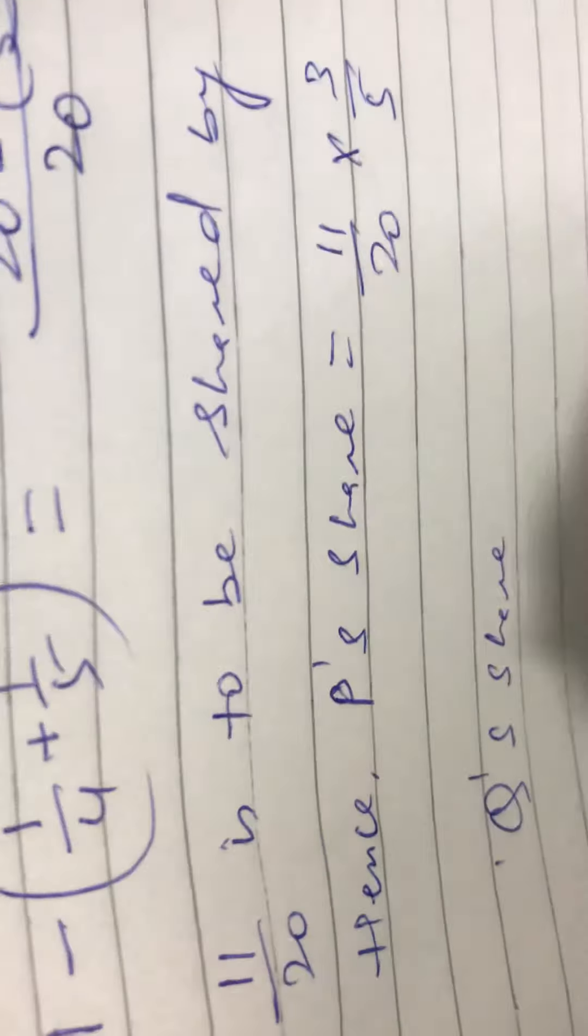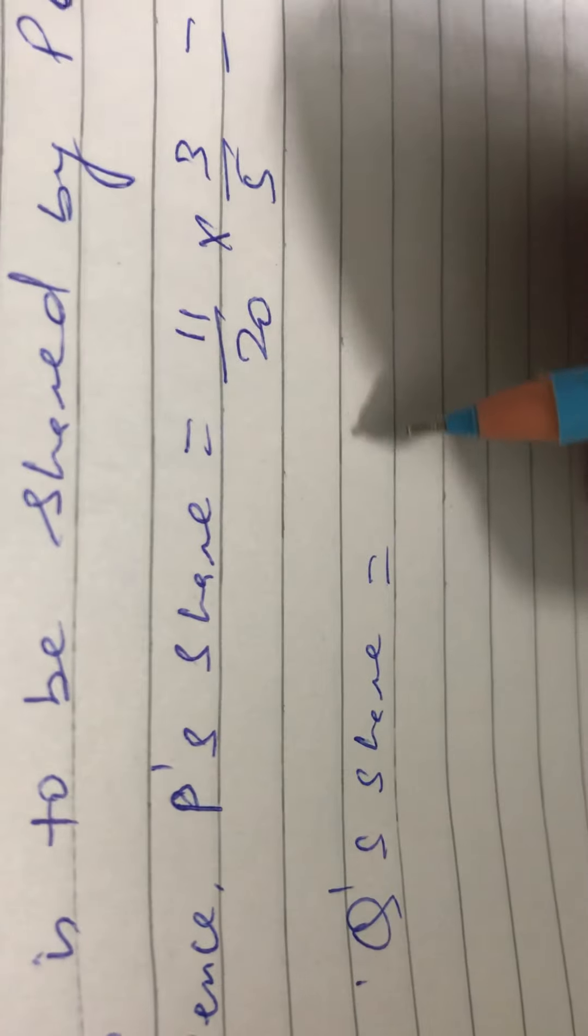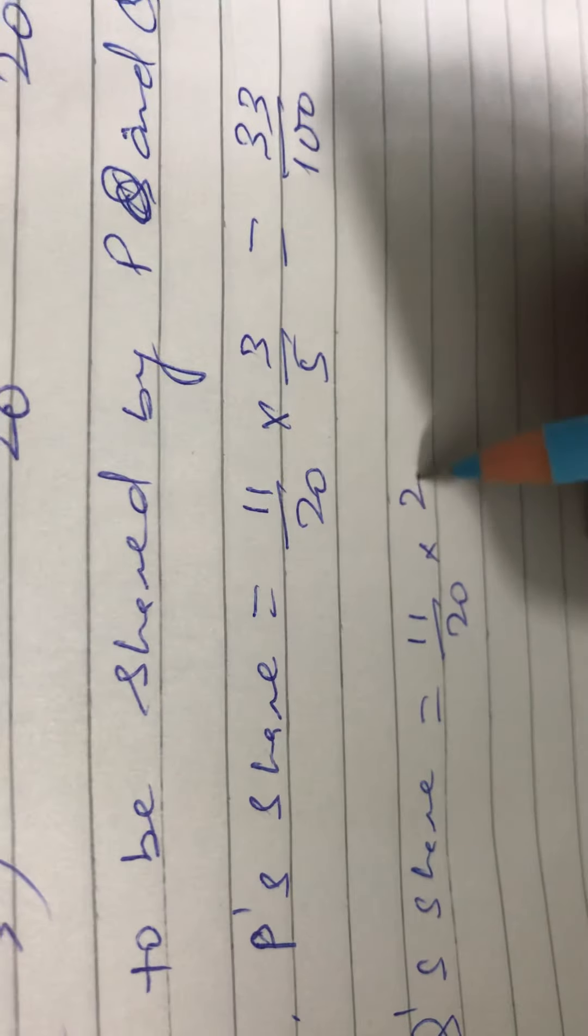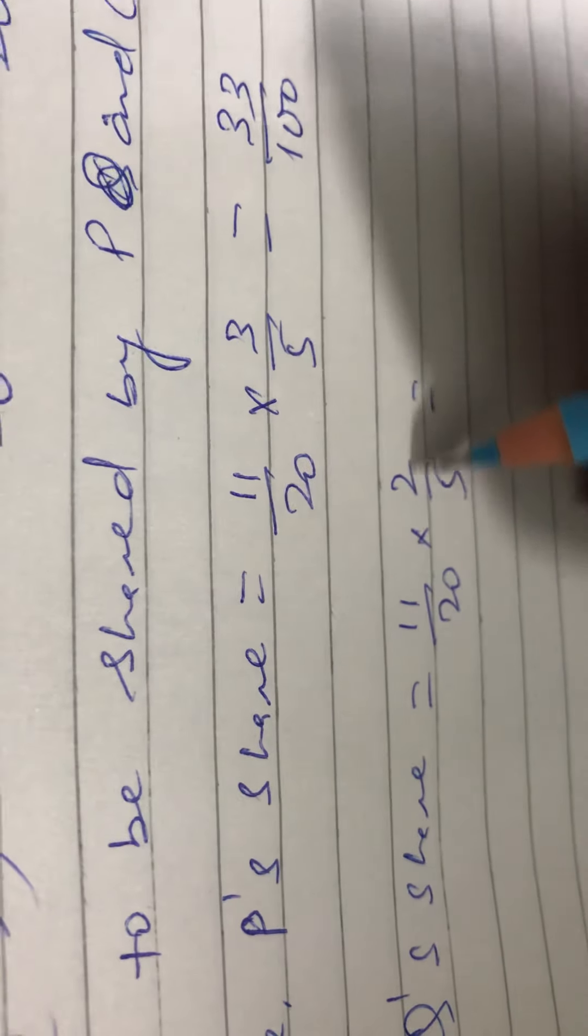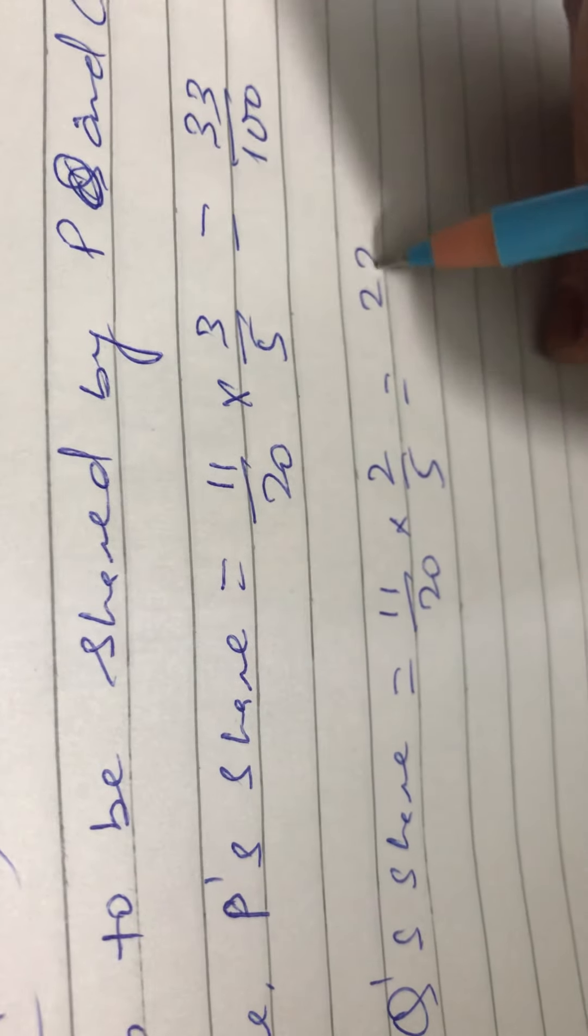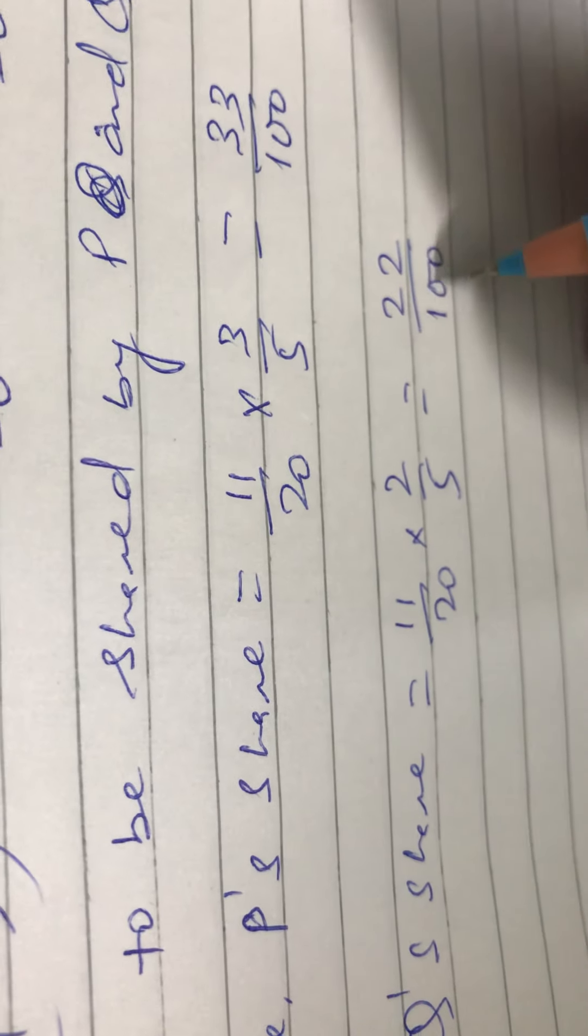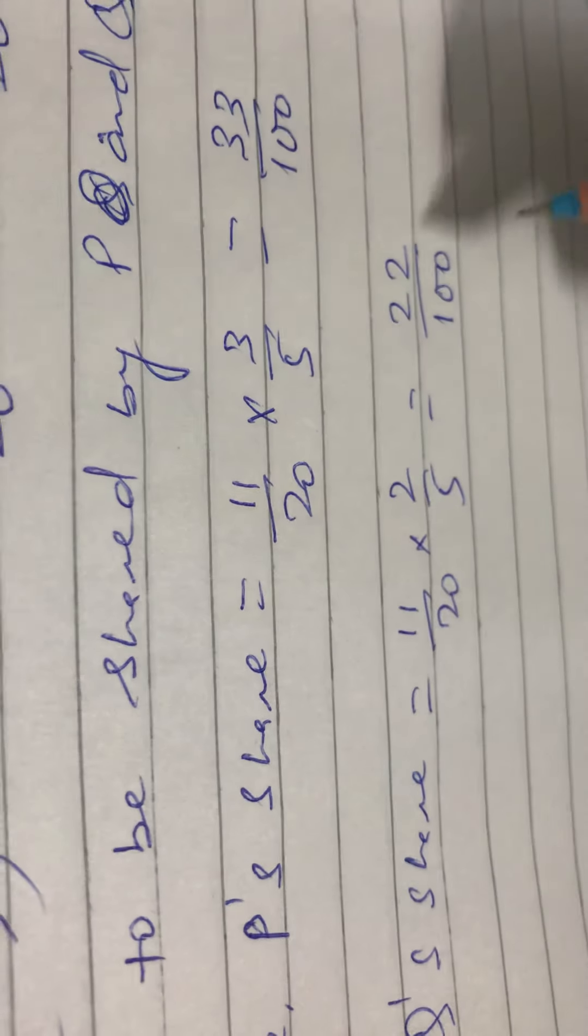Now Q's share is equal to 11/20 times 2/5 is equal to 22/100. Now new profit sharing ratio of P and Q.